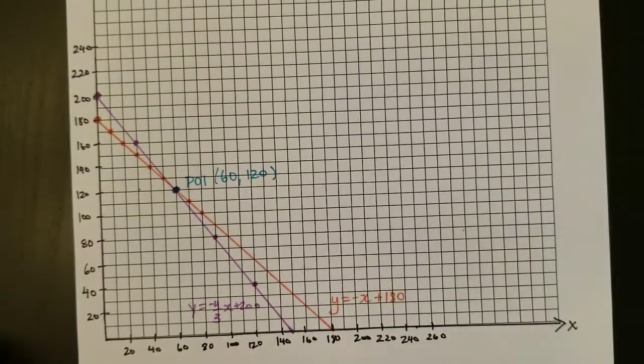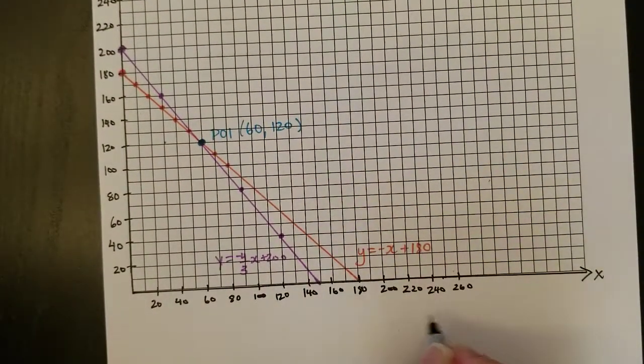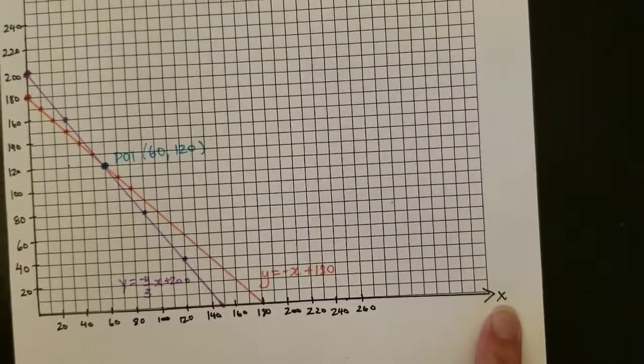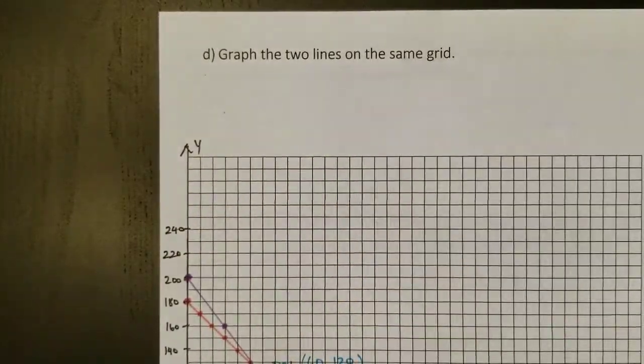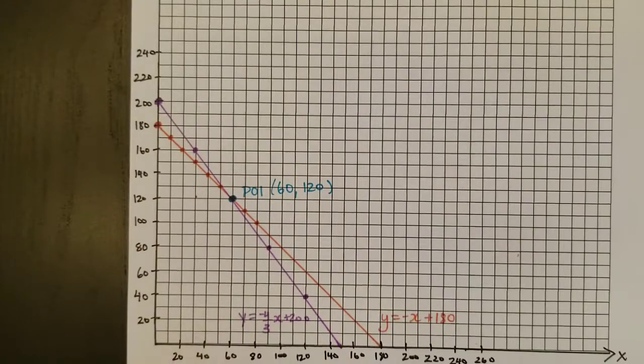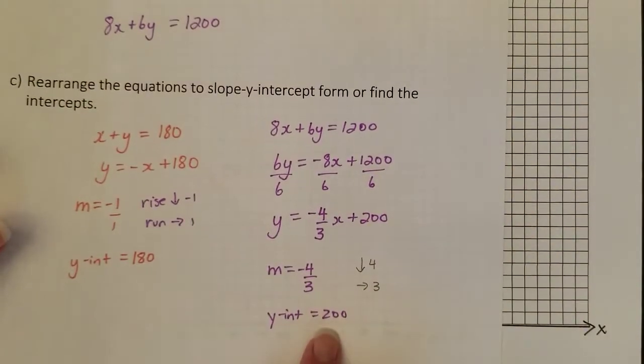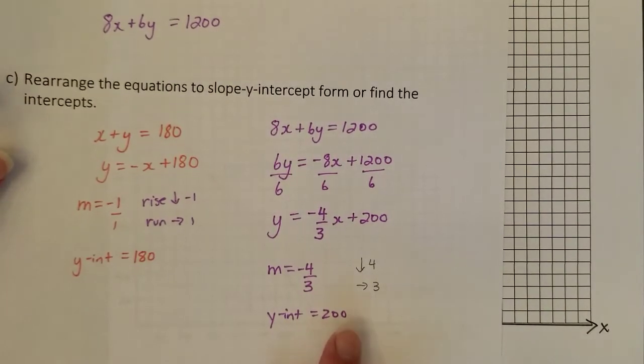So I'm going to label here the axes. So this is the X axis is labeled here, which was the number of adult tickets, and the Y axis labeled up here for the number of students. Now, I know from my equations that I found, I had a Y-intercept of 200. So I'm going to have to choose a scale that will go up to 200.